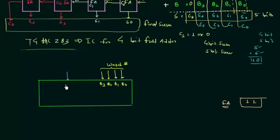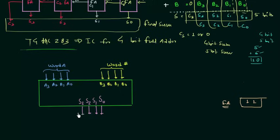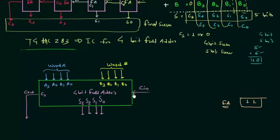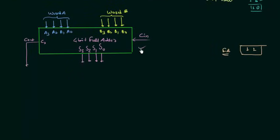The IC has inputs A1, A2, A3 and the second number inputs as well. S0 is the first bit of the sum, S1 is the second bit, S2 is the third bit, and S3 is the fourth bit. We also have C3 as the carry output and a carry input. This is how a 4-bit full adder can be represented, and you can obtain an 8-bit full adder by using two such 4-bit full adders.